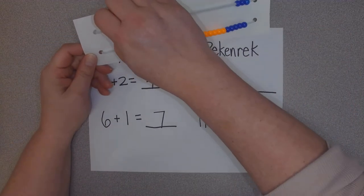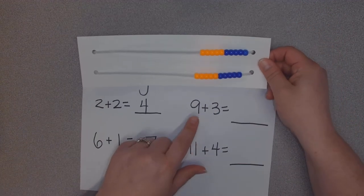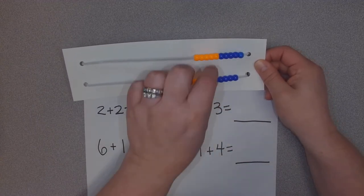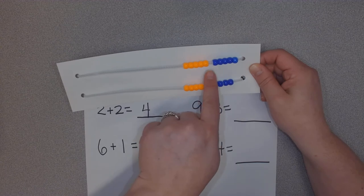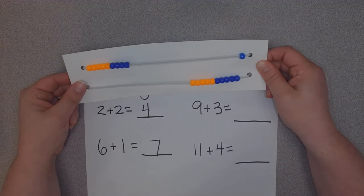We're going to try it again. We'll erase our little Rekenrek board. Over here I have 9+3. Well, I'm going to build it again. I know that this is ten on the top and one less is nine, so I don't even have to count them all. I'll just move over the nine here.